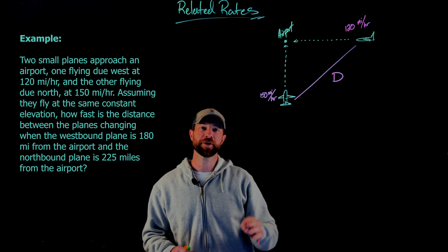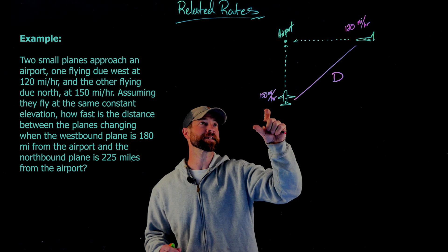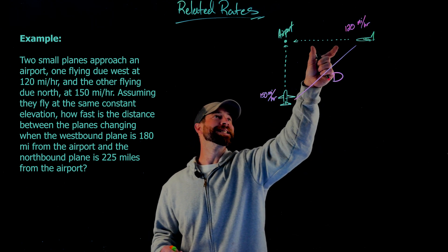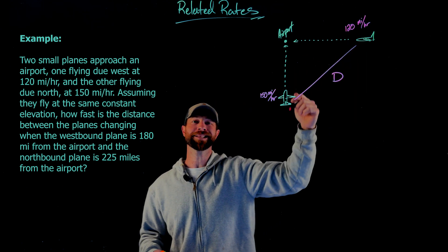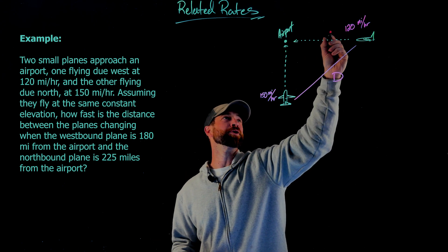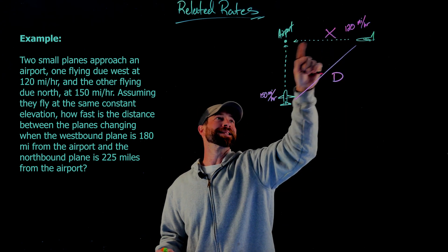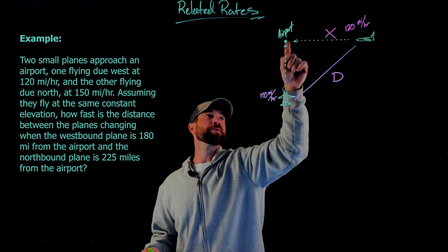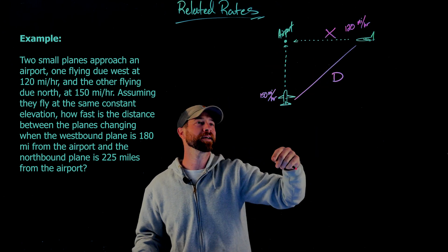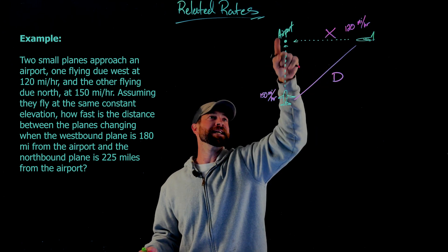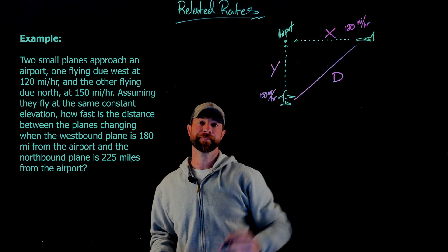Before I go any further, I want to label the rest of this. I'm going to think of this as a right triangle. The distance the first airplane — headed westbound — is from the airport, I'm going to label that value X, as it's horizontal as I've drawn it here. And this distance for the second plane, I'm going to call Y.